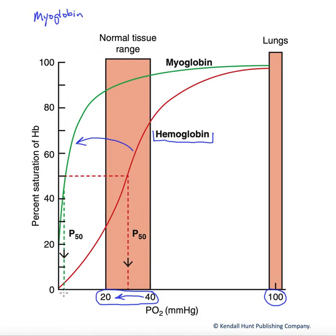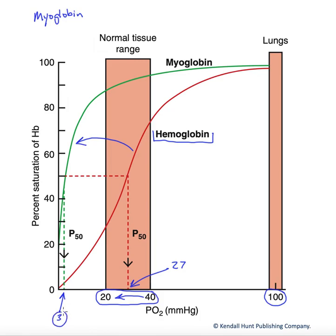This is shown by the P50 values. The P50 for myoglobin is about 3 millimeters of mercury PO2. The P50 for hemoglobin is way over here at about 27 millimeters of mercury PO2. Remember, P50 is simply the partial pressure of oxygen required to generate 50% saturation.